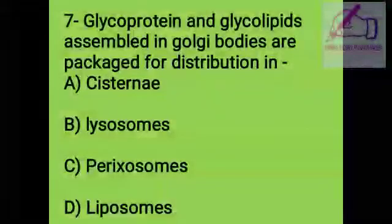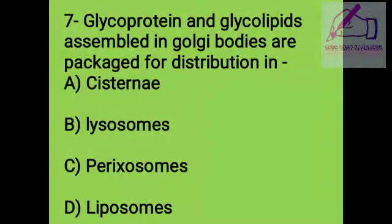Question 7: Glycoproteins and glycolipids assembled in the Golgi body are packaged for distribution in the: A. Cisternae, B. Lysosome, C. Peroxisome, D. Lumen. The answer is A, cisternae.